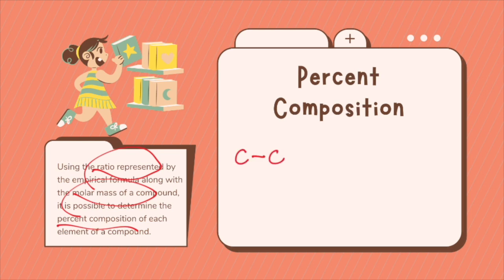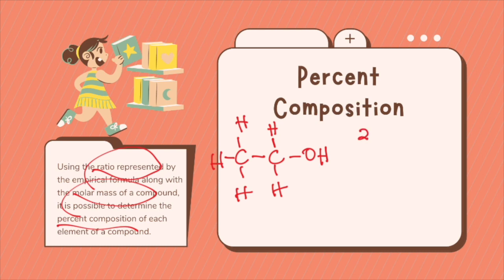This is the structure for ethanol. You have 2 carbon atoms, 6 hydrogen atoms, and 1 oxygen atom.